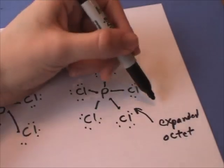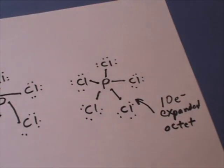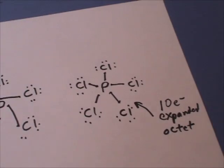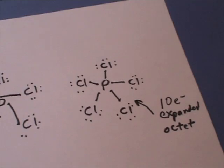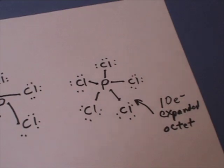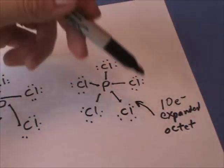So now this one has 10 valence electrons. So I'll say that one more time in a different way. Periods one and two can't expand their octet. Periods three and below are able to expand their octet, and they do. So this is a valid Lewis structure for this PCl5.